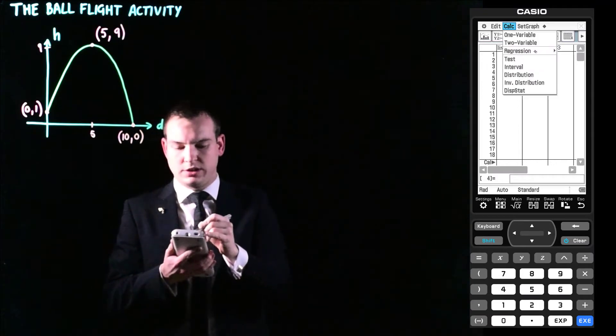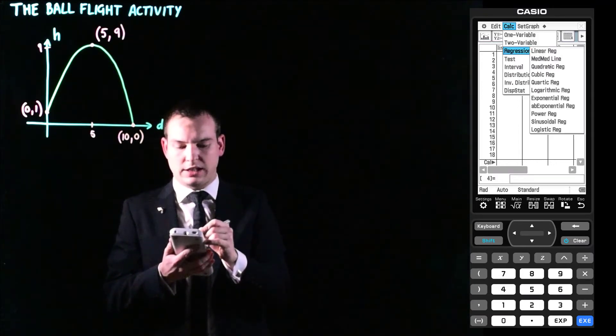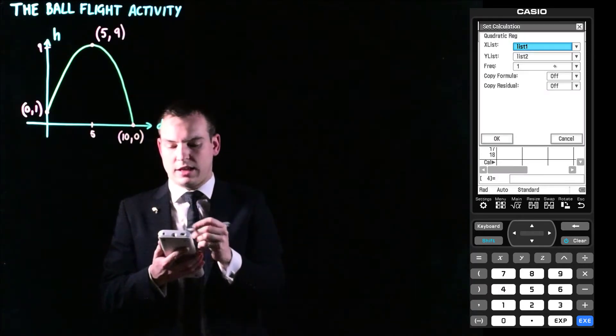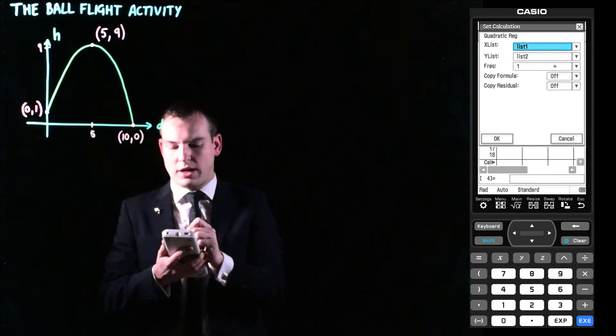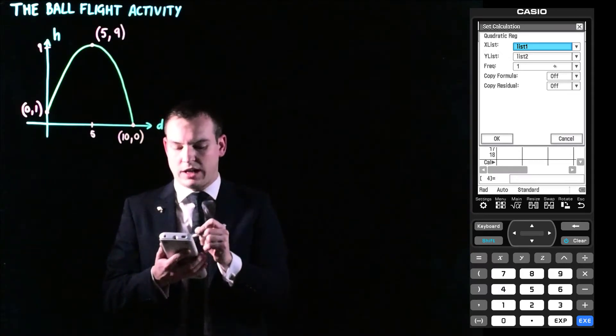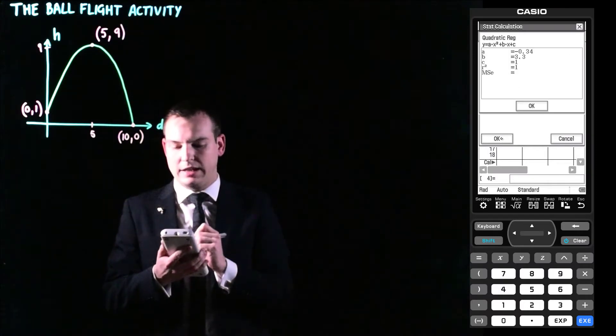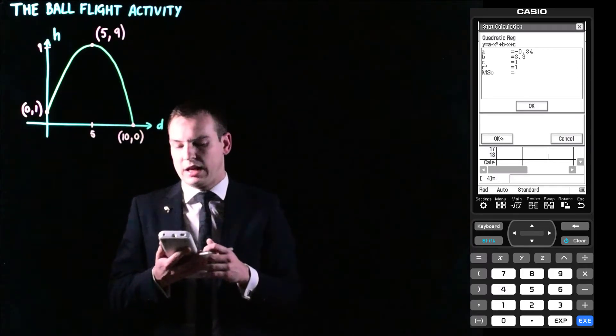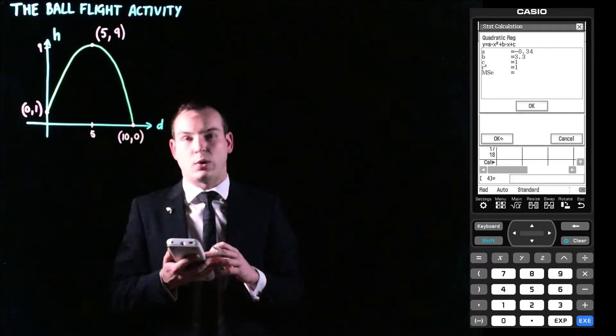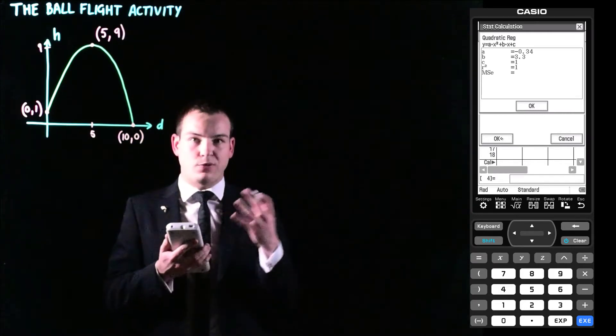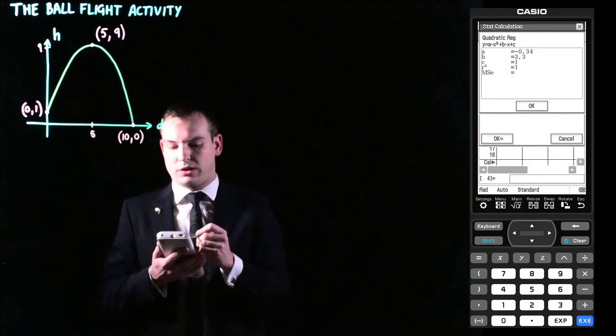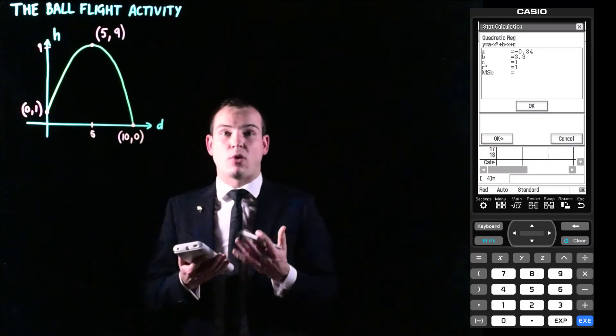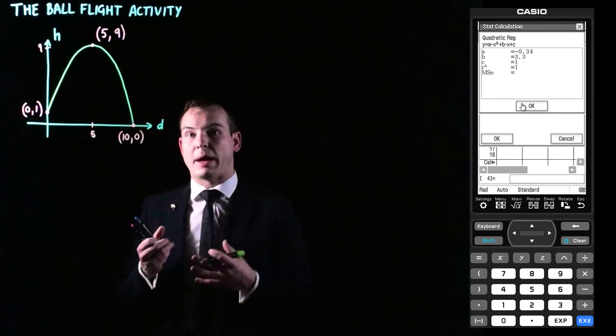And next we're going to go Calc, Regression. And we're going to click on Quadratic Regression, which is just in blue on your screen at the moment. And it can see that the X list or the X values are in list one. The Y values are in list two. So that's good. And all we need to do now is hit OK. And it gives us the quadratic regression or it goes through and finds the equation of the quadratic. And you can see that it's found it in the form AX squared plus BX plus C. Where A from our calculator is negative 0.34. B is 3.3. And C is one.